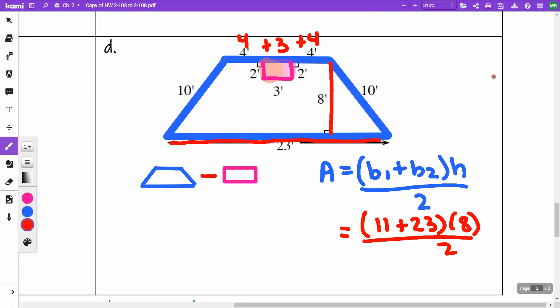So the area of my trapezoid was 136. So I'm going to have 136 minus the area of this rectangle, which is going to be 6 because it's 2 by 3. So minus 6. So my area of my whole entire shape is going to be 136 minus 6, which is 130 square feet.